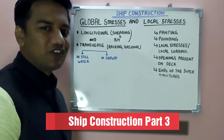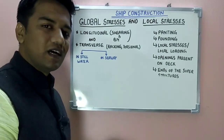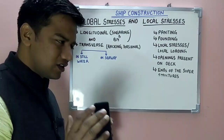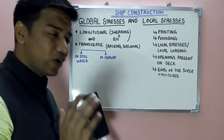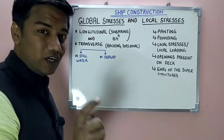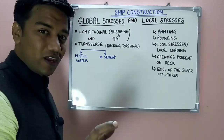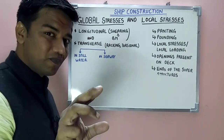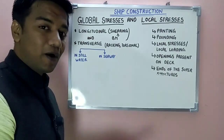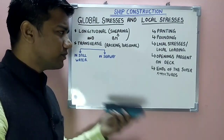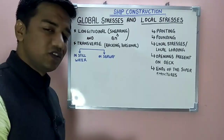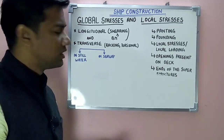Beginning with ship construction part 3, our next topics are global stresses and local stresses. The word global means overall, so stresses acting over all the extremities of a ship are called global stresses. Local stresses are those which act over a particular region of a ship. Under local stresses we have panting, pounding, local loading, openings present on deck, and ends of the superstructure.